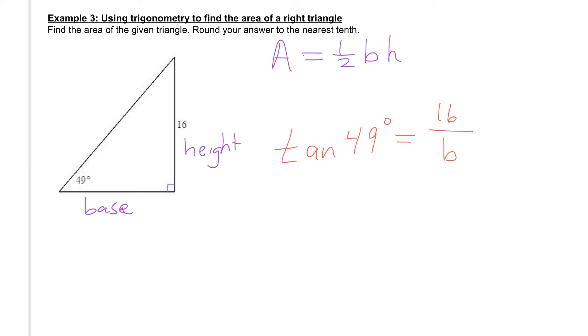And then solve for b. To solve for b, we'd multiply both sides by b first, giving us b times the tangent of 49 degrees equal to 16. And then divide both sides by the tangent of 49, and we get b is equal to 16 over the tan of 49 degrees.